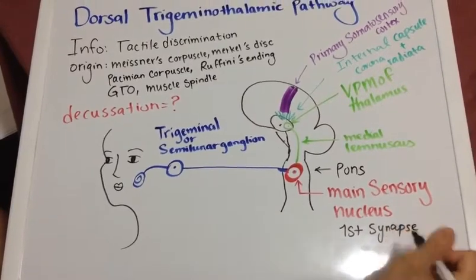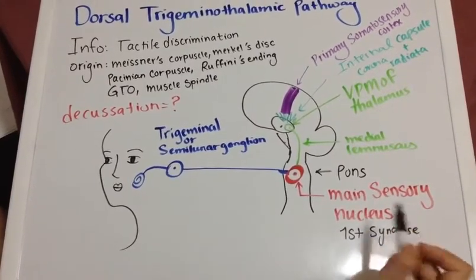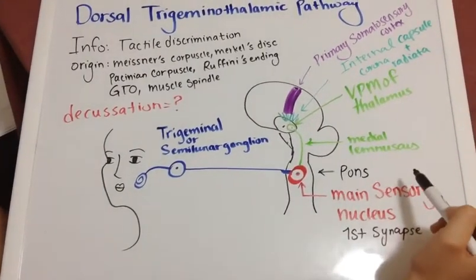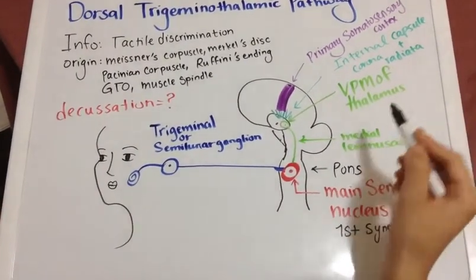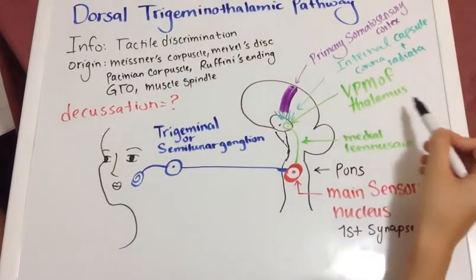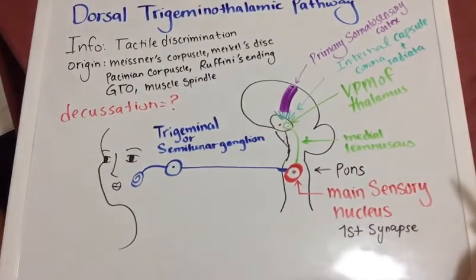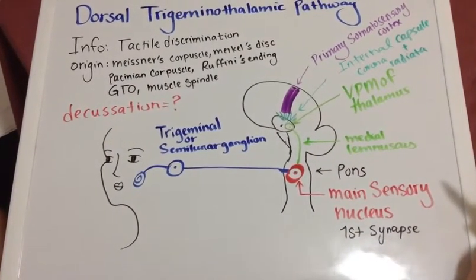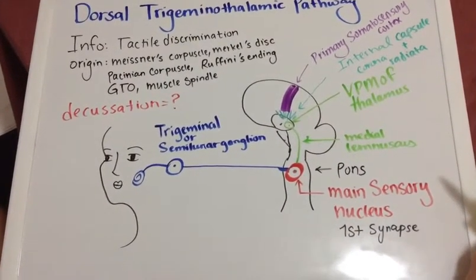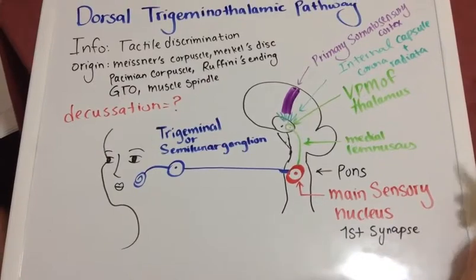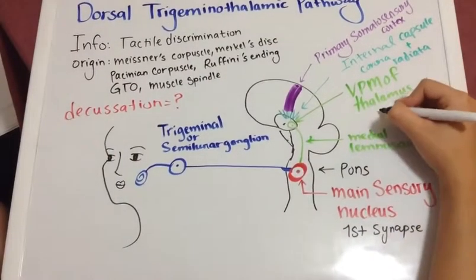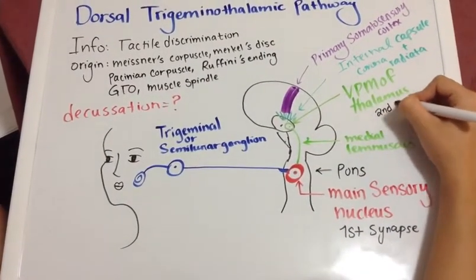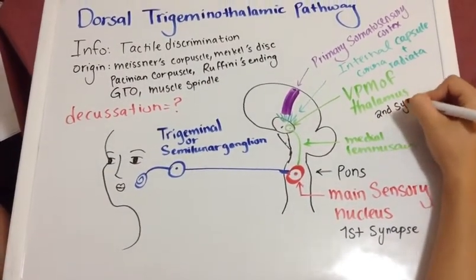Then the information ascends via the medial lemniscus. The second synapse occurs at VPM — the ventral posteromedial nucleus of the thalamus. So here you will have your second synapse.